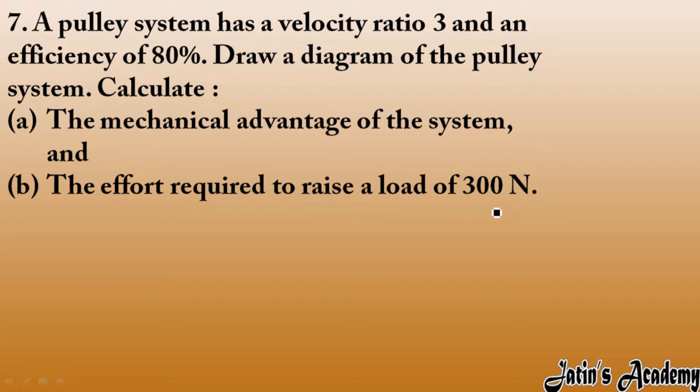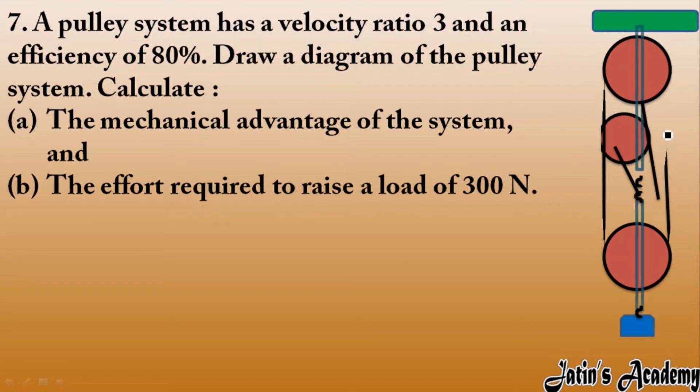Now carefully see, we have a pulley system in which velocity ratio is 3. Block and tackle system, velocity ratio 3, so here we have a diagram. 3 pulleys means we have to make only convenient direction.